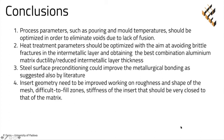Moreover, the following improvements are suggested for future research: 1. Process parameters such as pouring and mold temperatures should be optimized to eliminate voids due to lack of fusion. 2. Heat treatment parameters should be optimized to avoid brittle fractures in the intermetallic layer and to obtain the best combination of aluminum matrix ductility and reduced intermetallic layer thickness. 3. Steel surface preconditioning could improve metallurgical bonding as suggested by literature. 4. Insert geometry needs to be improved, working on the roughness and shape of the mesh. 5. The stiffness of the insert should be very close to that of the matrix.